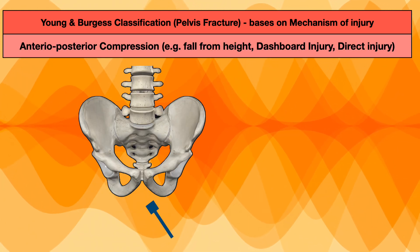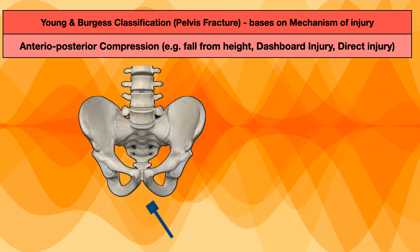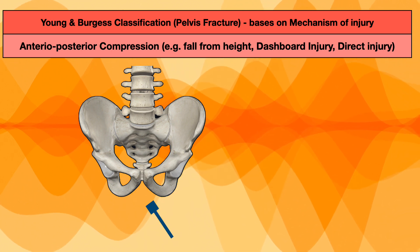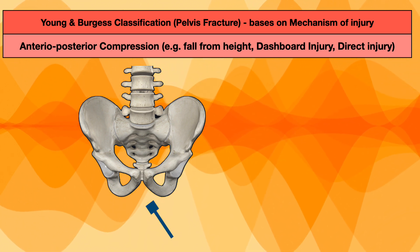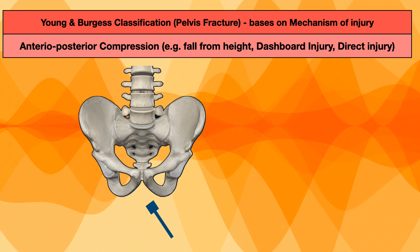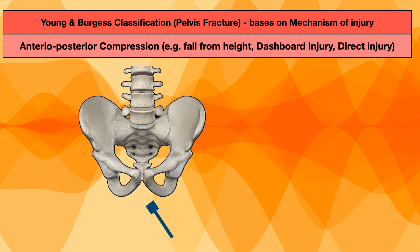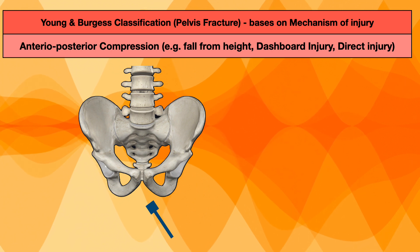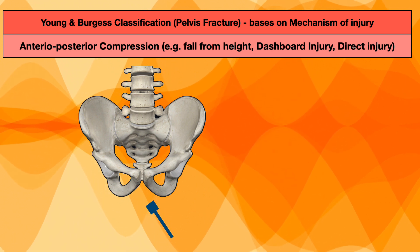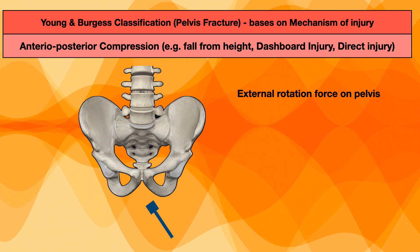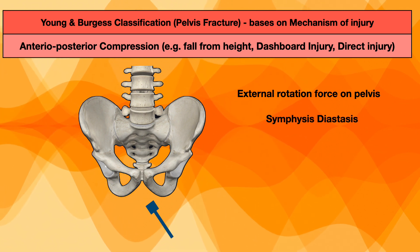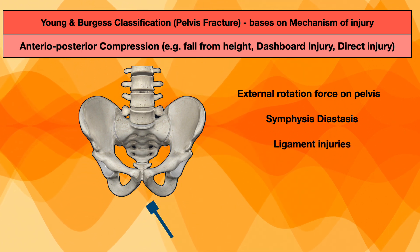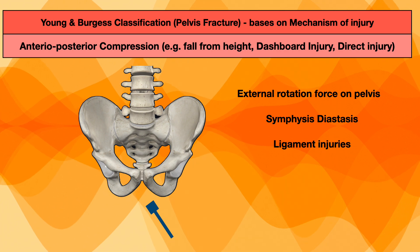The next type is anteroposterior compression, meaning the force is coming directly from the anterior or from the posterior. For example, a fall onto the buttocks can cause a posterior force, a dashboard injury can cause a direct impact from the anterior side, or a direct blow to the pelvis by a heavy object can lead to anteroposterior compression. If we have an anteroposterior compression, there will be an external rotation force on the pelvis, and it may lead to diastasis of the symphysis and posterior ligament tear. Let's discuss the types of anteroposterior compression.